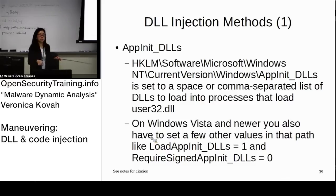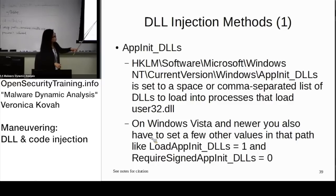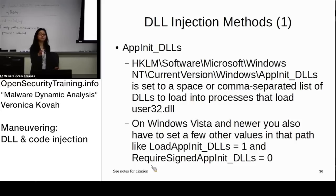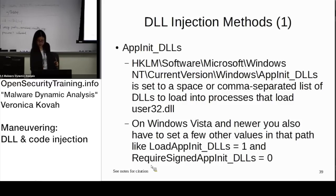For this class we are using Windows XP, but in later versions they changed it — you can configure Windows so that if a DLL is not signed it will not load it, or even disable AppInit_DLLs entirely. However, AppInit_DLLs is just a registry key, so if an attacker wants to they can change the value and still load it. There are some mechanisms to block AppInit_DLLs, but they can be bypassed.